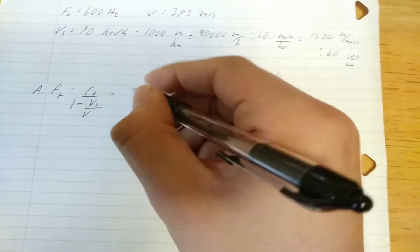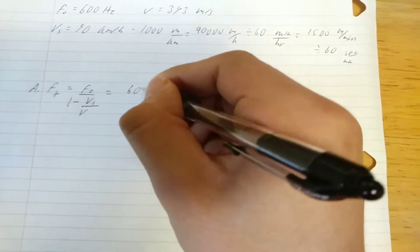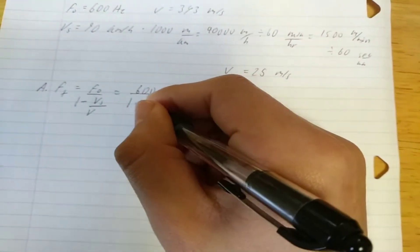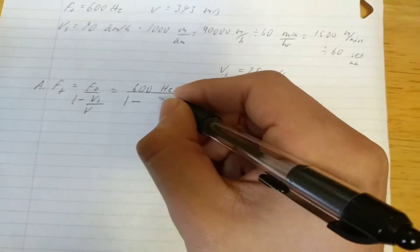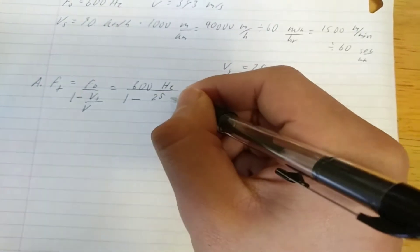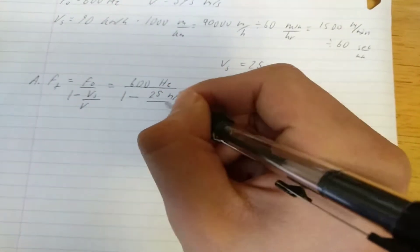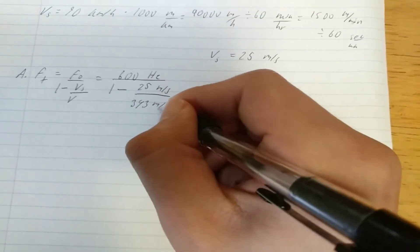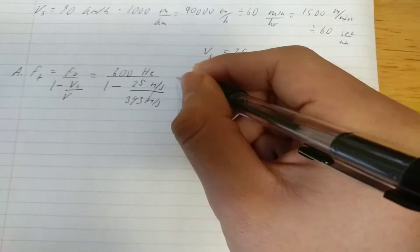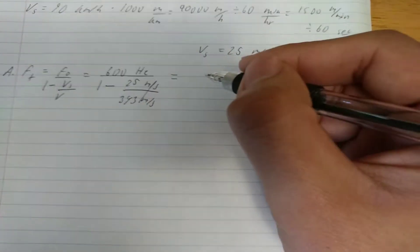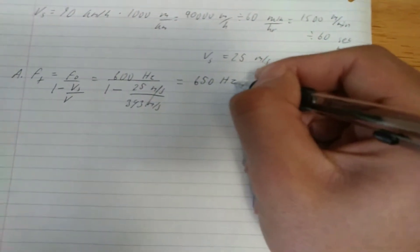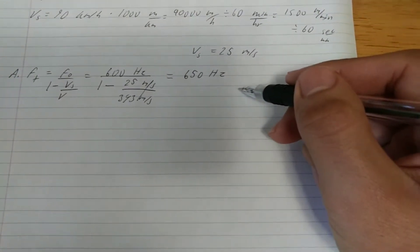So we get initial frequency, which is 600 hertz, over 1 minus the velocity of the source, which we found to be in standard units 25 meters per second, divided by the speed of sound in air, which is 343 meters per second. Our units cancel out on the bottom, and after we do the math, we are left with 650 hertz, which is the frequency heard by a person in front of the car.